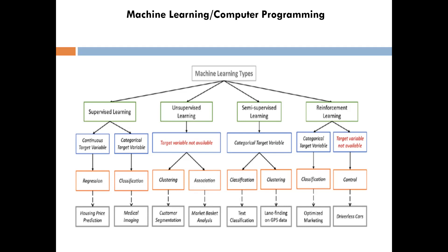Reinforcement learning is about learning from feedback — there's no past data, but you do something and if you get the desired result, you do more of it; if you don't, you stop. Parents scold a child for bad behavior and appreciate good behavior — that's reinforcement. When you play chess, you think which move gives the best result. That's feedback learning — reinforcement learning.